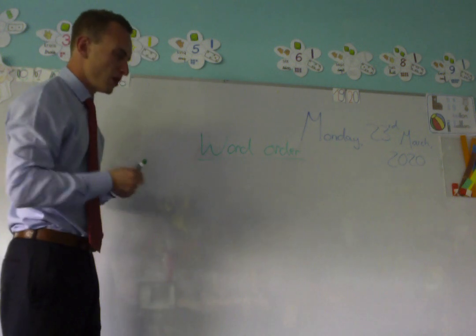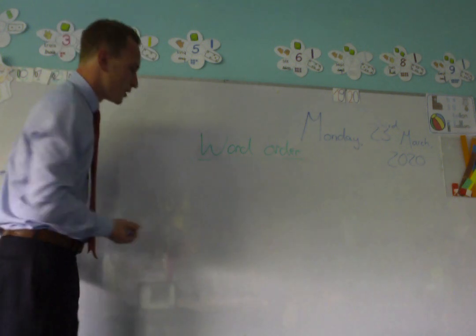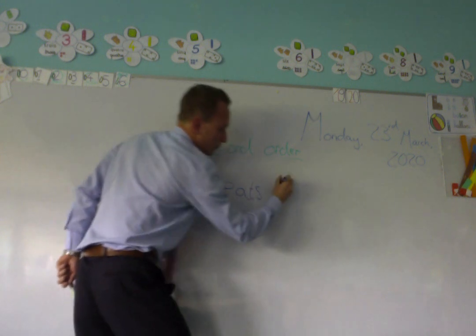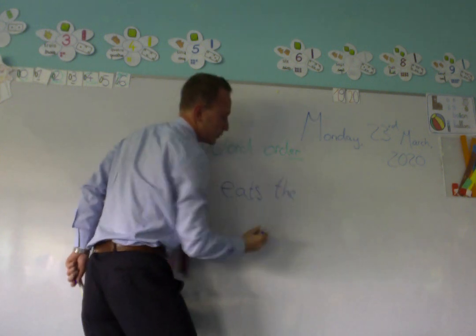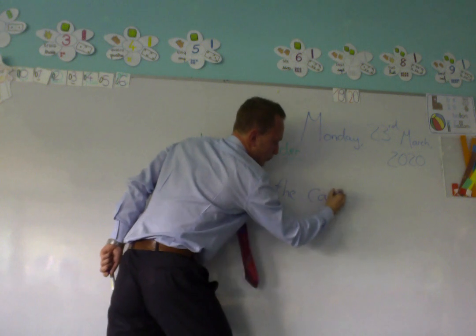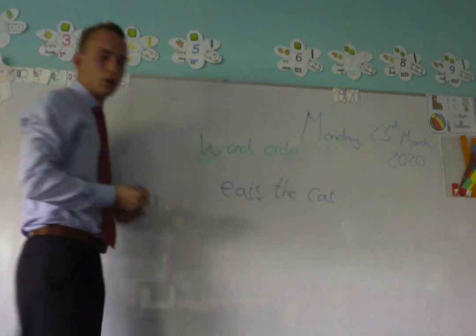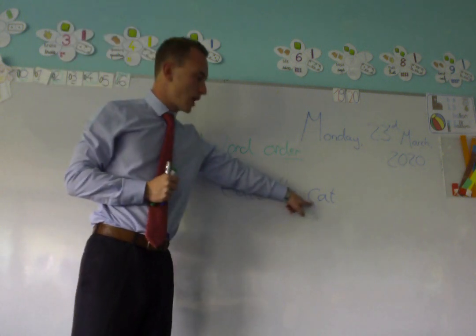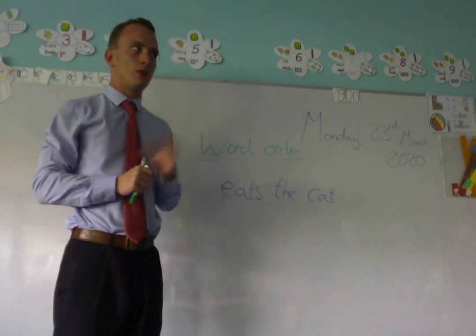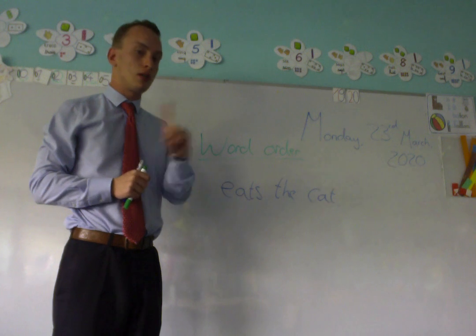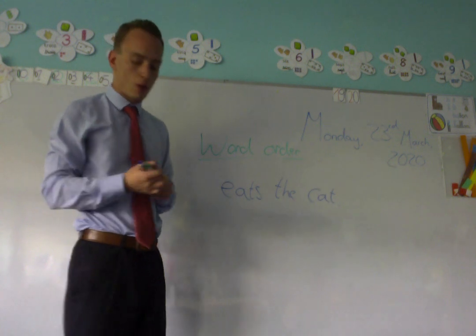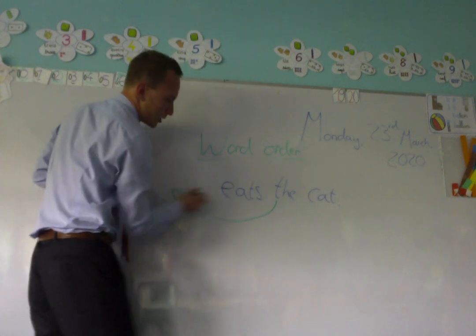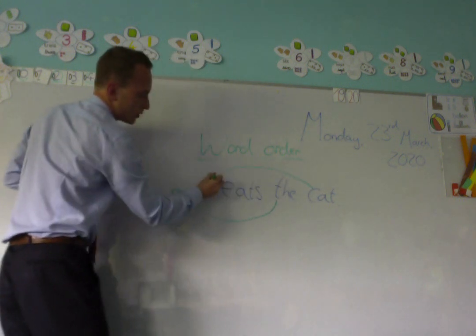For example, if I were to write a sentence like this, can you read it? It says, 'eats the cat.' Oh, this is a strange sentence. This is not correct. We must change the order of the words to make a complete sentence.